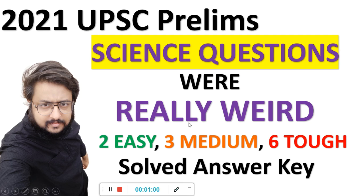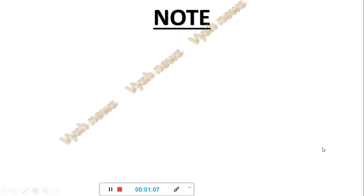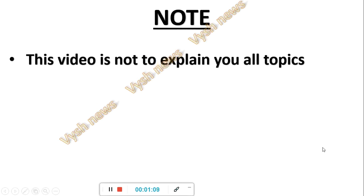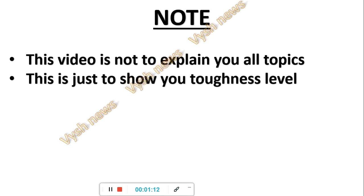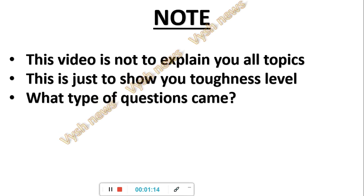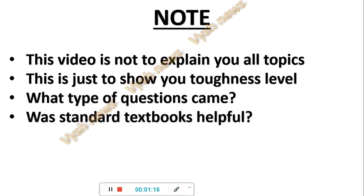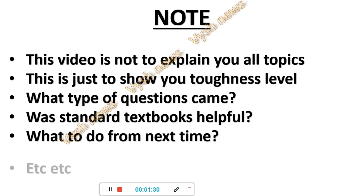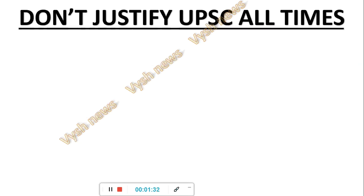The history video is already there where 21 questions are completed. Now today we'll do science where 11 questions are there. So 21 plus 11, 32 out of the hundred analysis will get complete. This is not like teaching you these topics, it is the analysis. Here we'll see, as I told it's weird questions again - two easy, three medium and six tough.